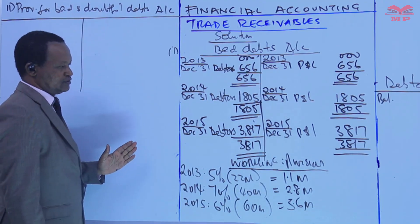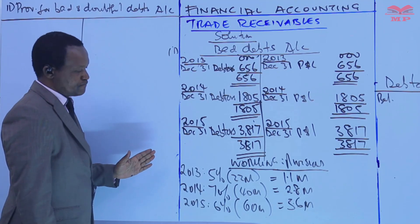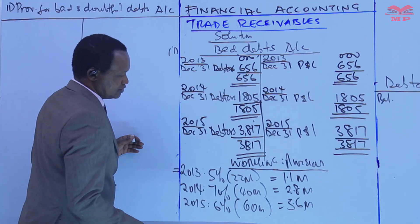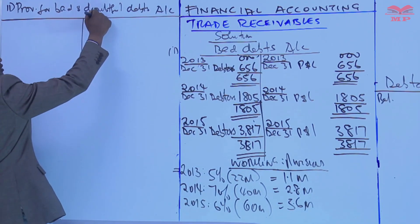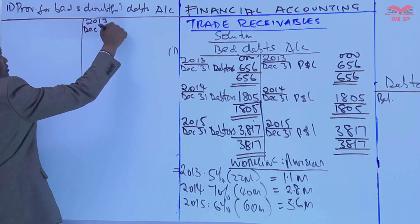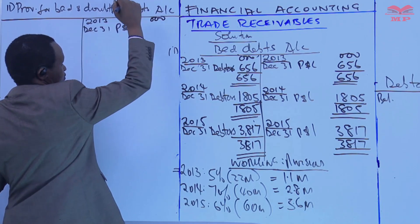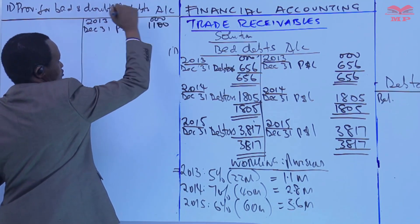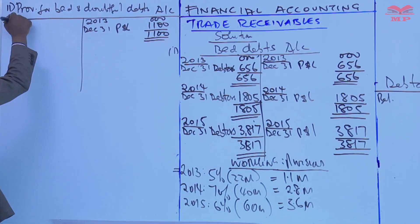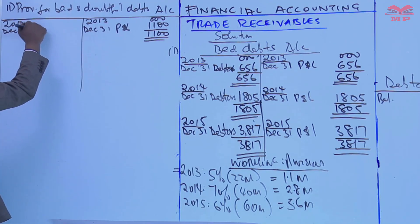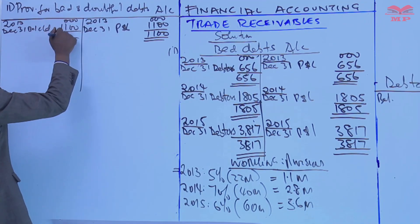Now let's account for the provision for doubtful debts. The first year: we said we credit the provision and debit the P&L account. In 2013, December 31, we credit this account — P&L — with 1.1 million. We close this account with balance carried down of 1.1 million on both sides.